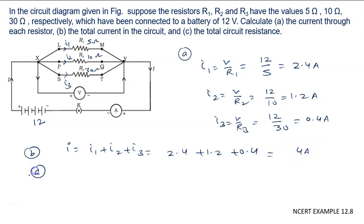Then C part, total circuit resistance. Here, all the resistances are connected in parallel. So 1 upon R equal to 1 upon R1 plus 1 upon R2 plus 1 upon R3. So 1 upon R1 is 1 upon 5, 1 upon R2 is 1 upon 10, 1 upon R3 is 1 upon 30.